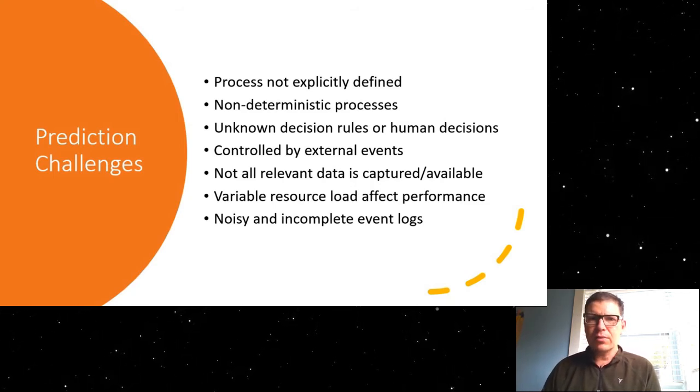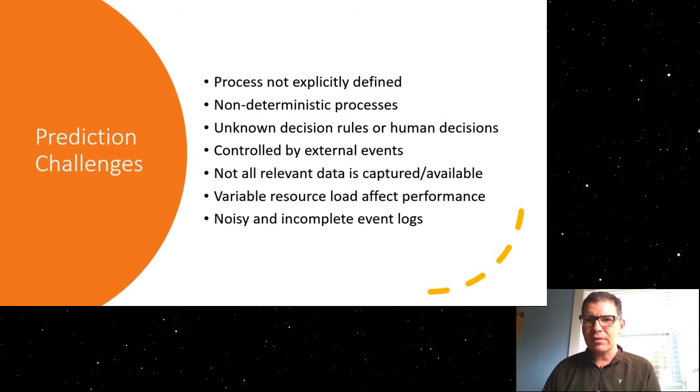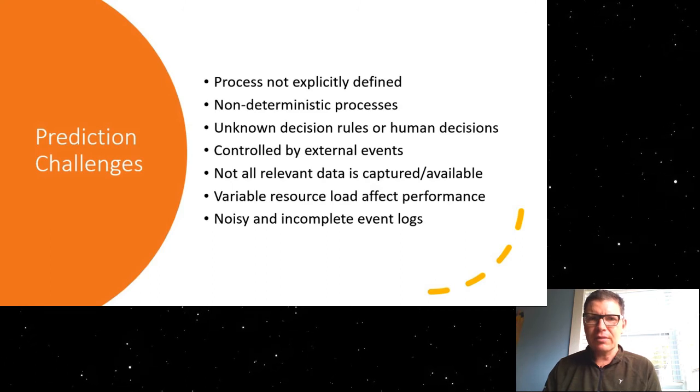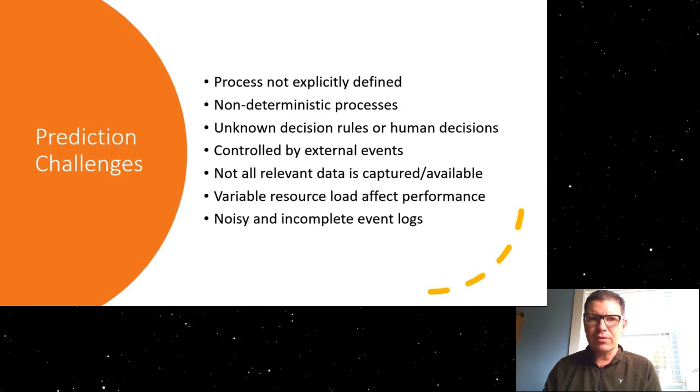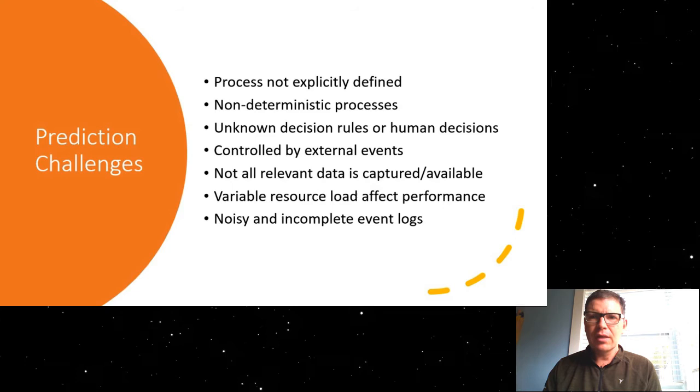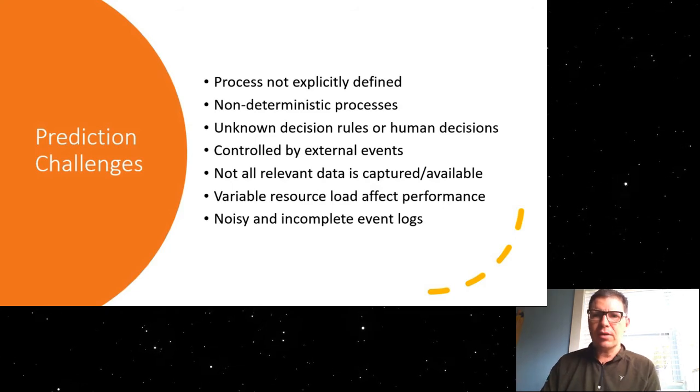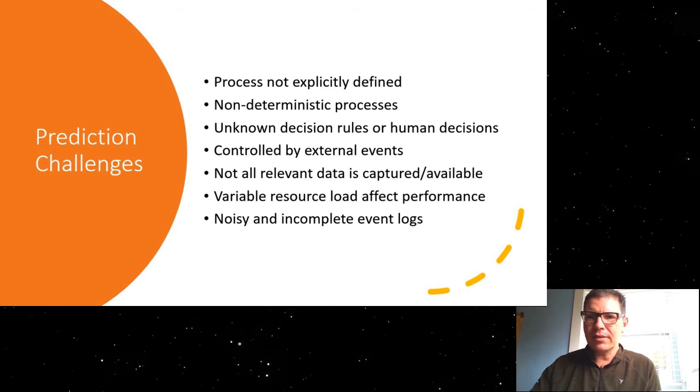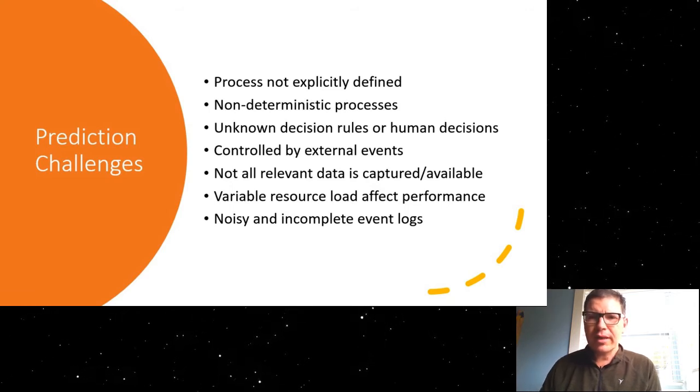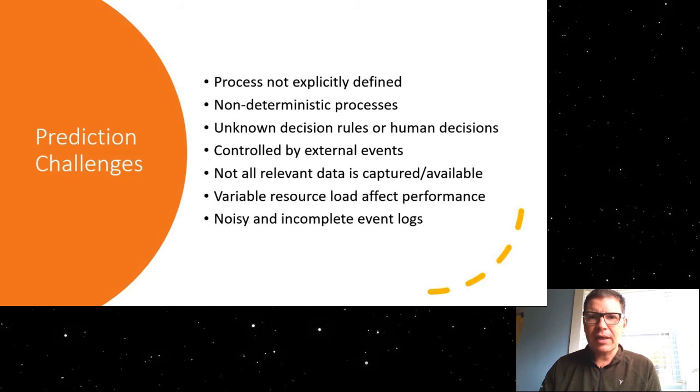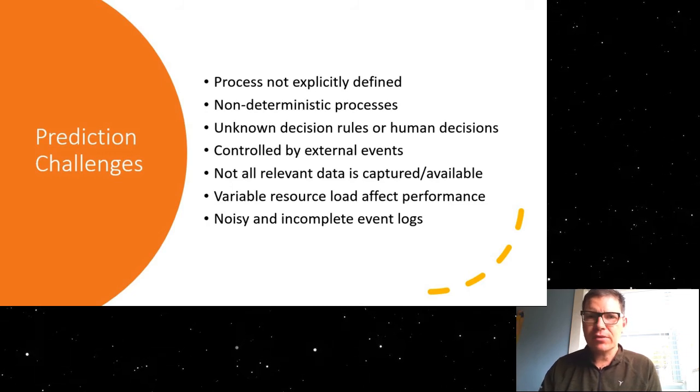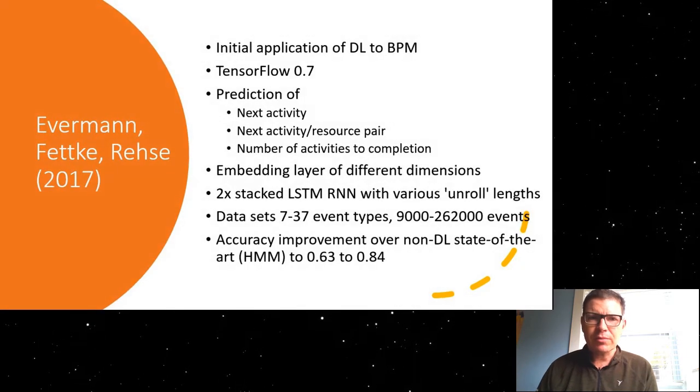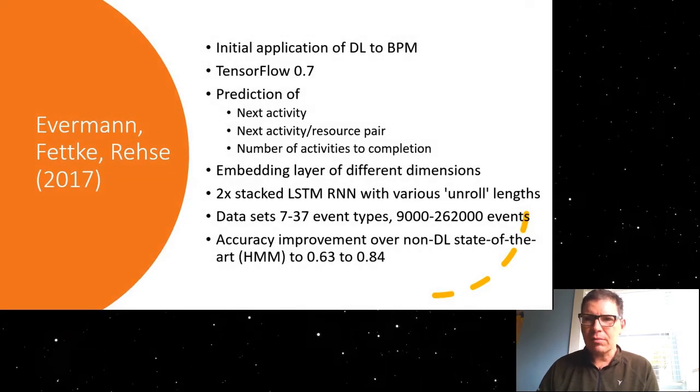On top of that, we might have noisy and incomplete event logs. So the actual software systems that capture the events might not do so all that well. So this is the general issue of prediction in business processes, and in order to attack this problem, people have increasingly, over the last five years or so, looked to AI techniques.